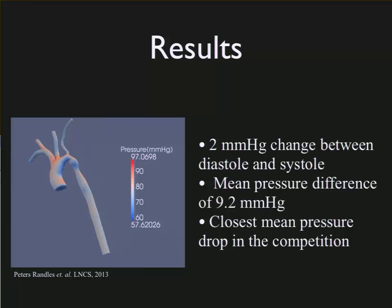Our results — you can see in the picture here how much the pressure is changing across the narrowing. We found the mean pressure difference to be 9.2; she'd be at high risk if it was 25, so she was going to be okay. We ended up having the closest result to the measured mean pressure drop in the competition, and it was also the fastest simulation in the competition as well.